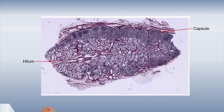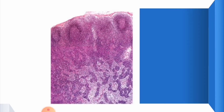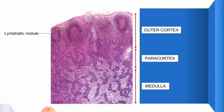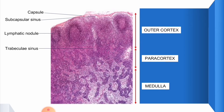The capsule of the lymph node is made of dense connective tissue. This capsule extends into the lymph node and makes partitions called trabeculae. The lymph node is divided into two portions: the outer portion is called the cortex and the inner portion is called the medulla. The cortex is divided into two parts — the outermost portion is the outer cortex, which consists of lymphatic nodules, and the innermost portion is the inner cortex, also called the paracortex. The lymphatic channels within the lymph nodes are called sinuses. The sinus just underneath the capsule is called the subcapsular sinus, the sinus adjacent to the trabeculae is the trabecular sinus, and they extend to the medulla to form medullary sinuses.